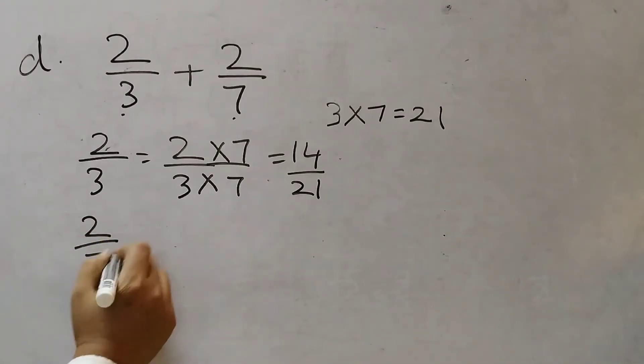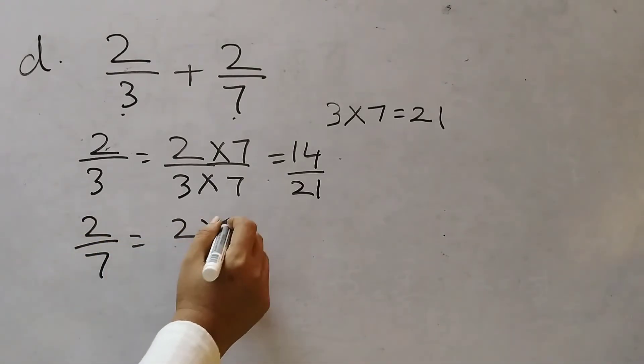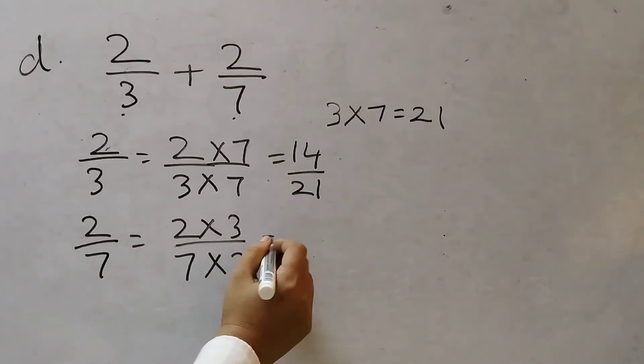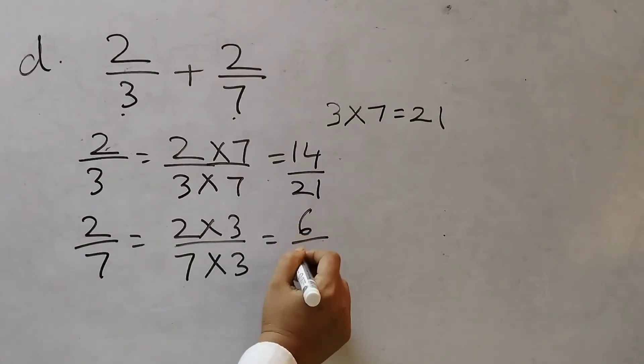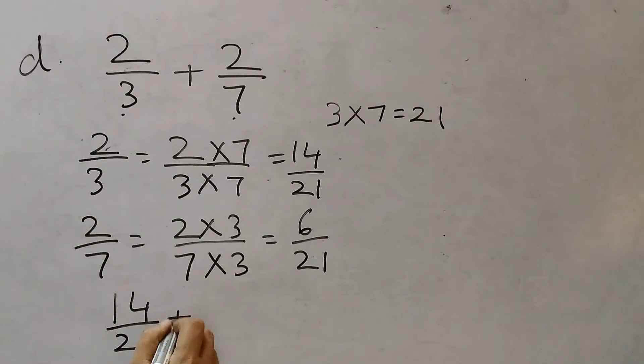Now 2 by 7 we will multiply by 3. 2 3's are 6. 7 3's are 21. Now we will add these 2 equivalent fractions. 14 by 21 plus 6 by 21. 14 plus 6 is 20. 20 by 21.